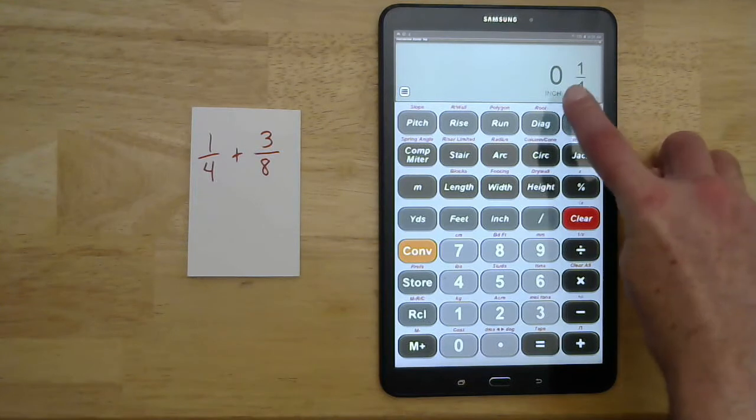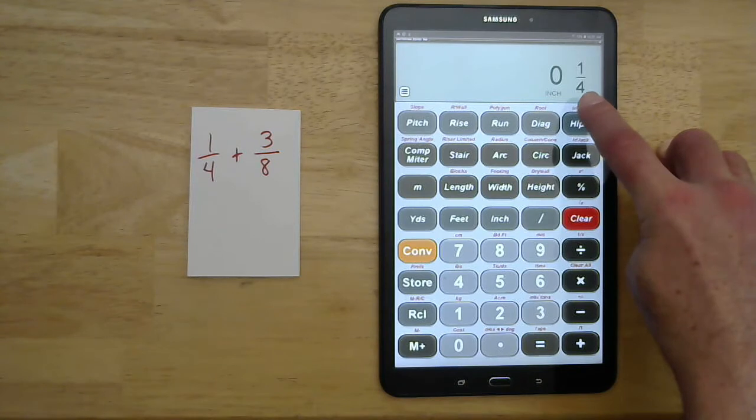You see how it says one-fourth here, and it says zero inches and one-fourth. That just means there's no whole inches. We're just doing a quarter of an inch.